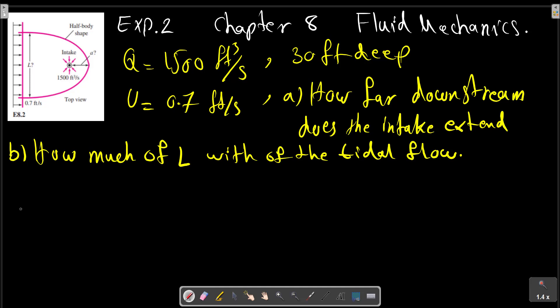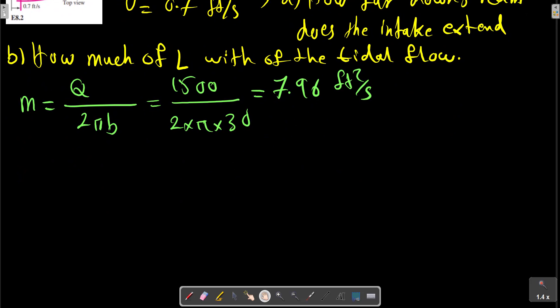The strength of the sink is a function of flow rate, m equals Q over 2πb. We have Q equals 1500 divided by 2π times 30, which equals 7.96 feet cubed per second. This is the strength of the sink.